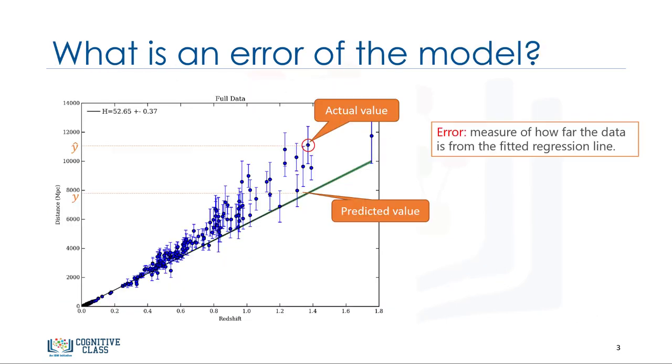In the context of regression, the error of the model is the difference between the data points and the trend line generated by the algorithm. Since there are multiple data points, an error can be determined in multiple ways.